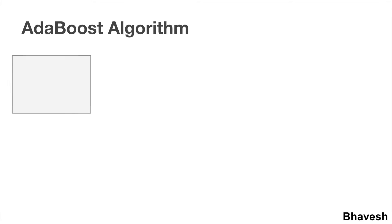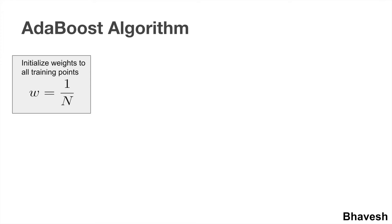The first step of AdaBoost is to initialize weights to all training points. At initialization, every point used for training an AdaBoost classifier will be assigned a weight equal to the reciprocal of the total number of points in the training dataset. For example, if I start with 10,000 samples, then each point at the initial training phase will be given a weight of 1/10,000.